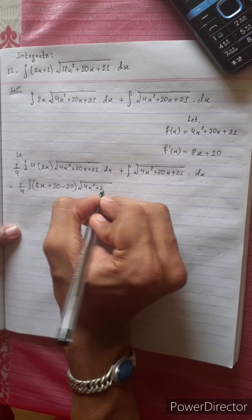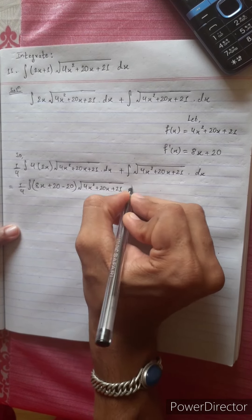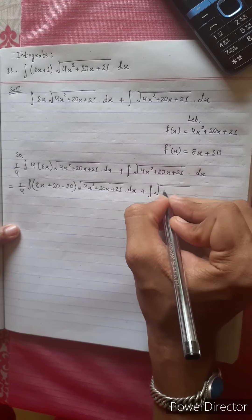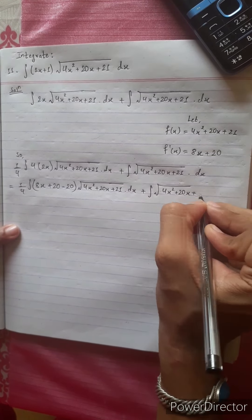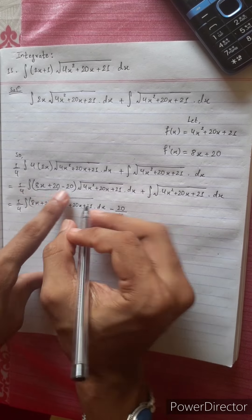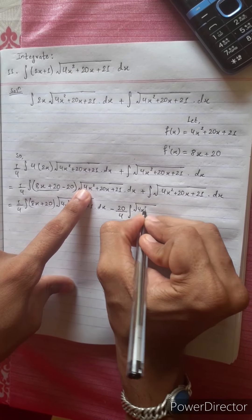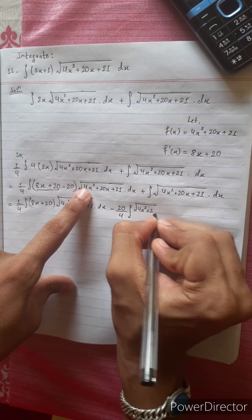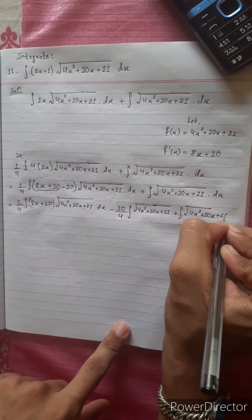We have integration of 4x squared plus 20x plus 21 dx, plus integration of 4x squared plus 20x plus 21 dx. Then: integration of 4x squared plus 20x plus 21 dx, minus 20/4 times integration of 4x squared plus 20x plus 21 dx.